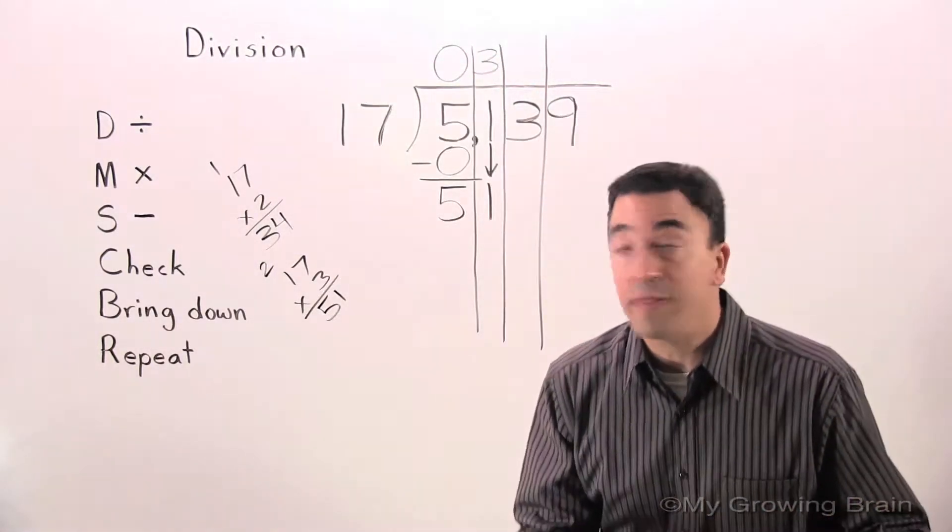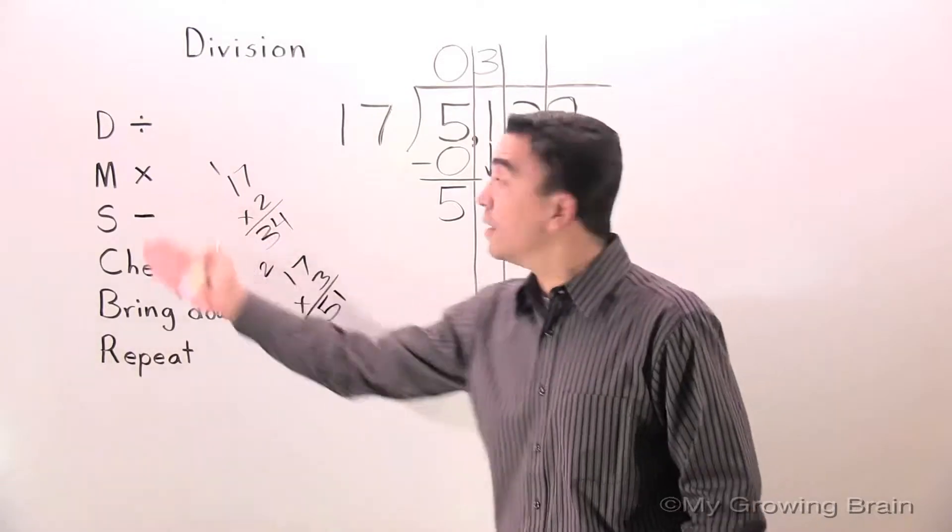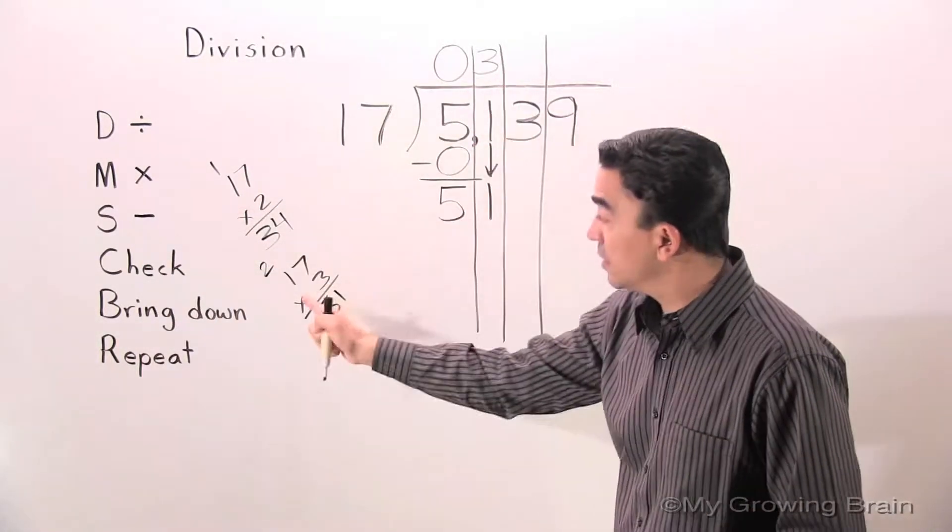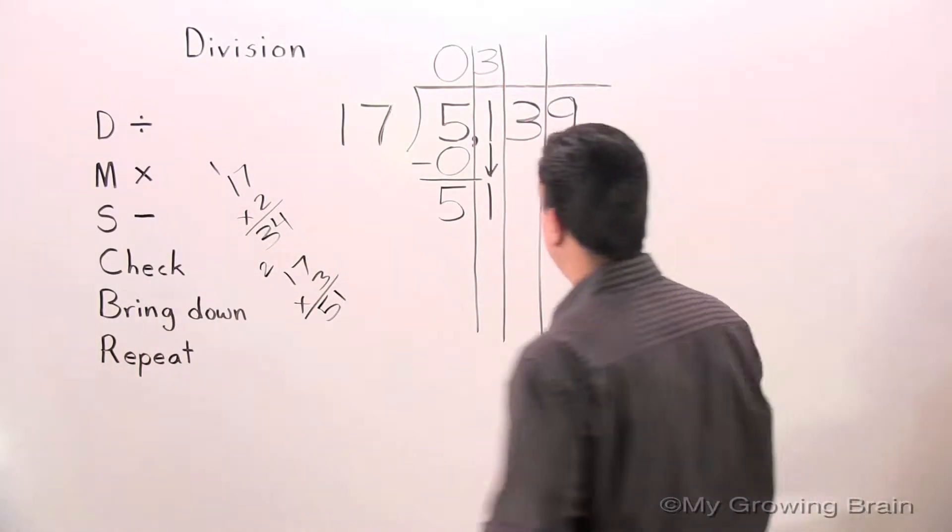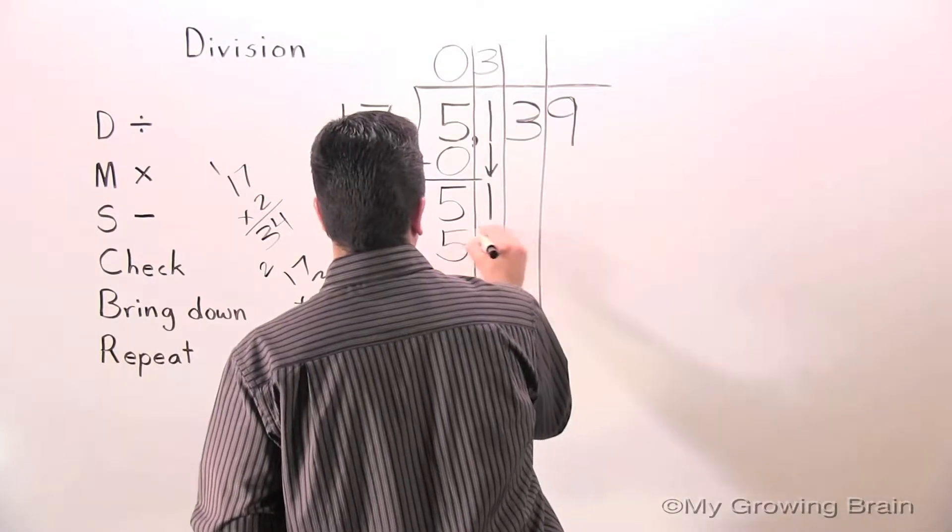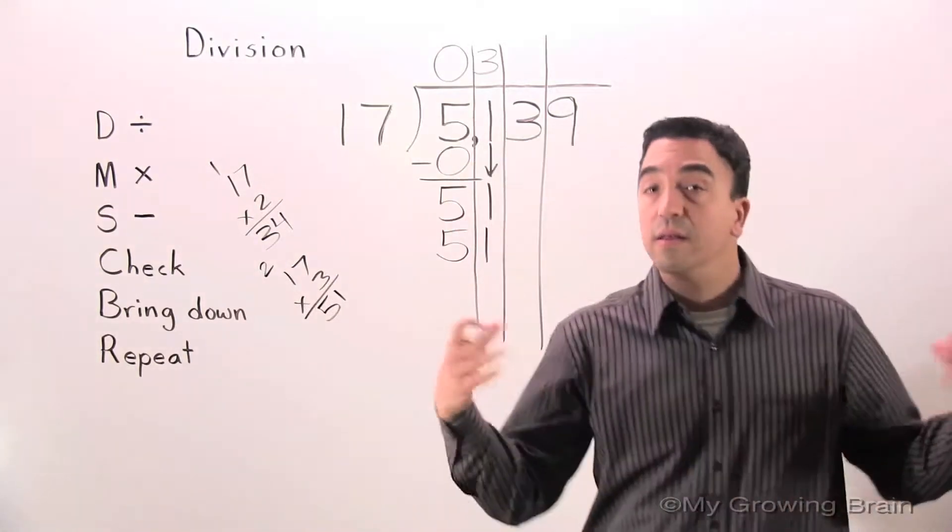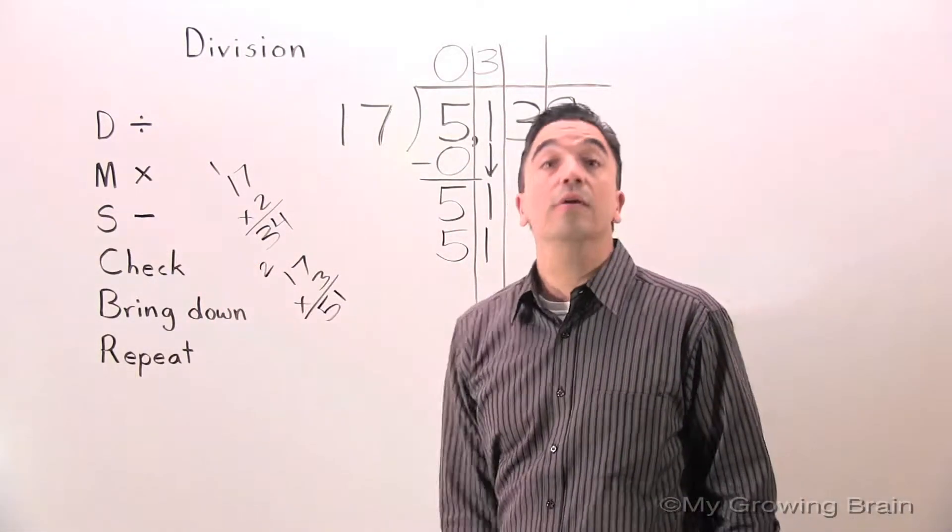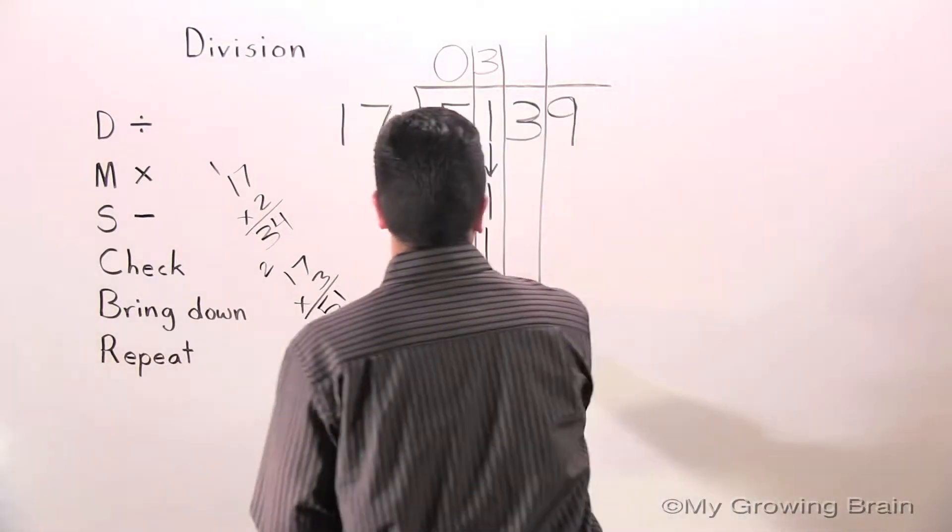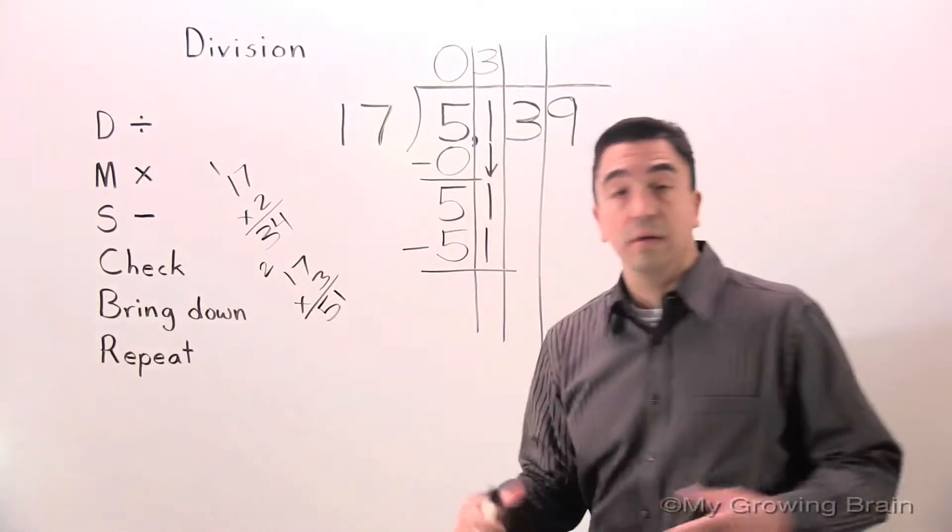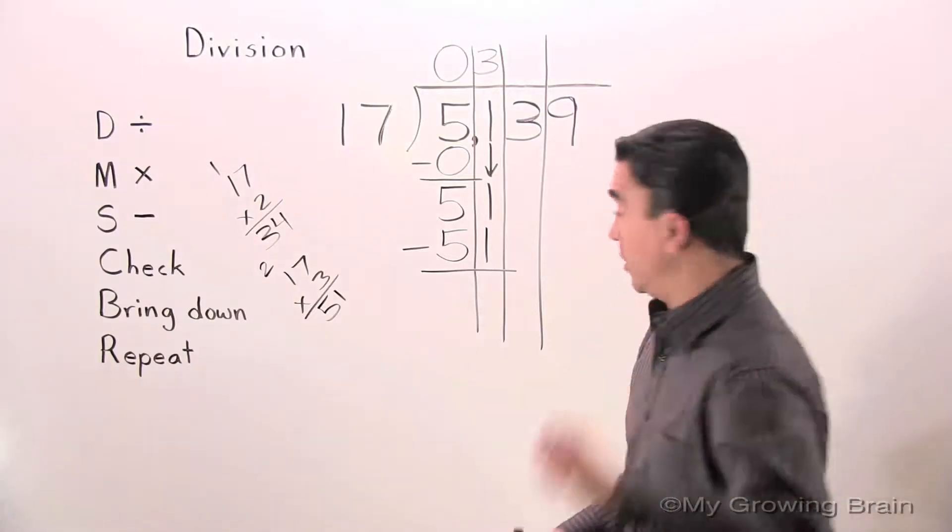Next step, multiply. 17 times 3, 51. Next step, subtract. 51 minus 51, 0.